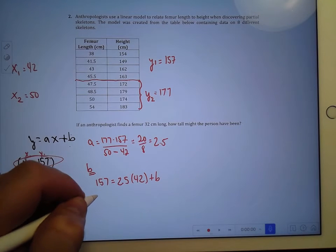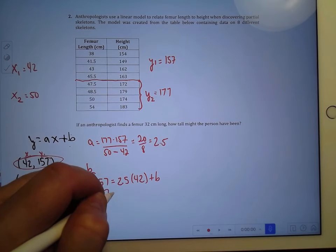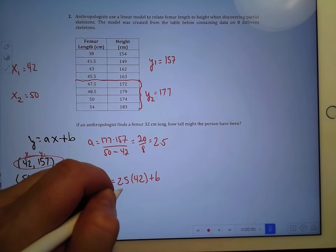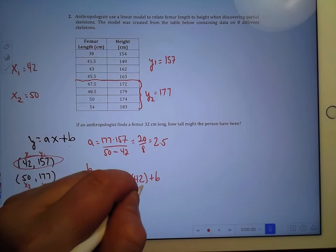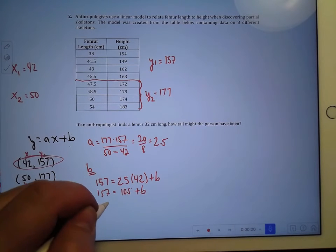So we're going to simplify here. 157 is equal to 2.5 times 42—that's 105—plus b. I have to subtract 105 from both sides, and I get 52 is my b.